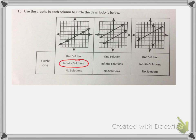The second graph is showing two lines that are parallel to each other. That means those lines are never going to touch, so they're never going to have a common solution, so that is no solution.